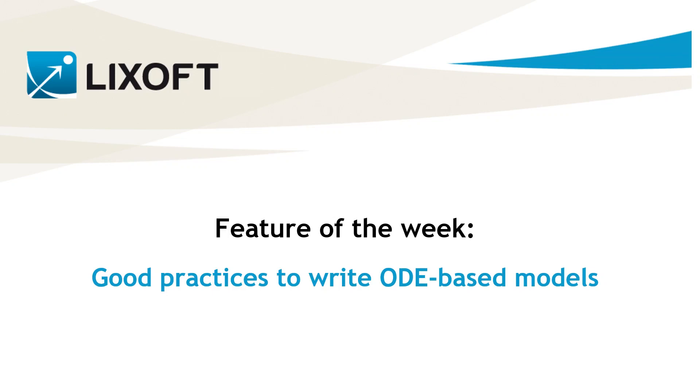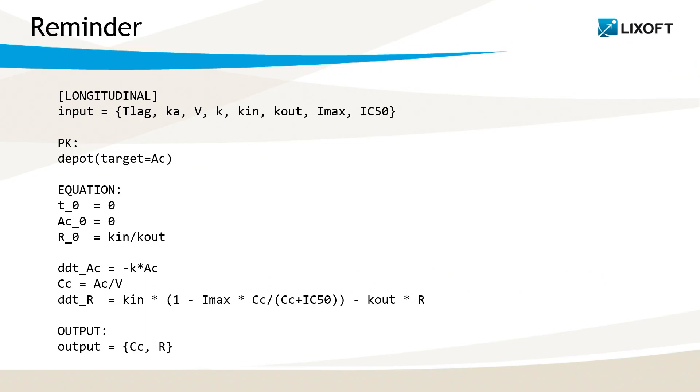It is quite common to use ordinary differential equation systems to write a model, so today I will teach you some good practices when using ODEs. As a brief reminder, ODEs must be defined in the equation section of the model. The syntax to describe the initial condition is variable name underscore zero, and for the time derivative it is ddt underscore variable name. In addition, doses from the dataset can be applied to ODE variables using the DPOT macro in the PK block.